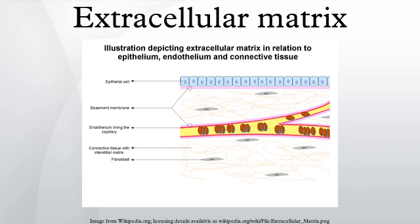Elastins are synthesized by fibroblasts and smooth muscle cells. Elastins are highly insoluble, and tropoelastins are secreted inside a chaperone molecule, which releases the precursor molecule upon contact with the fiber of mature elastin. Tropoelastins are then cross-linked to become incorporated into the elastin strand. Disorders such as cutis laxa and Williams syndrome are associated with deficient or absent elastin fibers in the ECM.